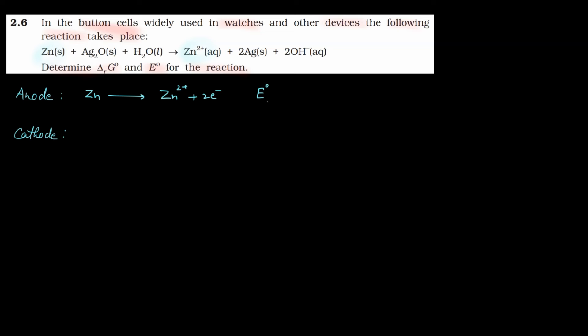If we write the oxidation potential, keep this in mind, the oxidation potential is plus 0.76 volts, or if we write reduction potential, it is minus 0.76 volts.